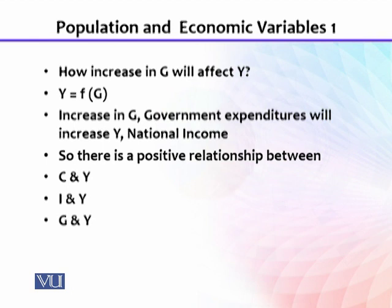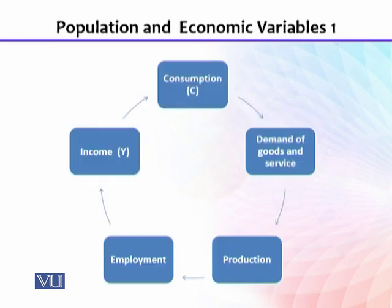National income and GDP grow through people's spending, through investment in the country, and through government expenditure. Government expenditure includes mega projects, development expenditures, and current expenditures — all of which become a source of income for people. This can also be seen through a circular flow: whenever people increase their consumption expenditure, it increases demand for goods and services, which increases production, which in turn requires more workers from factories, thereby increasing employment.